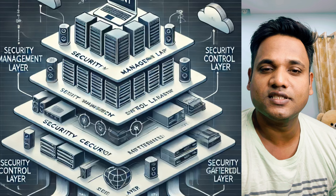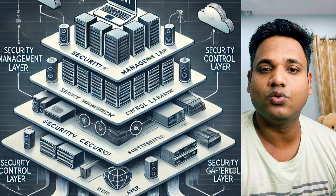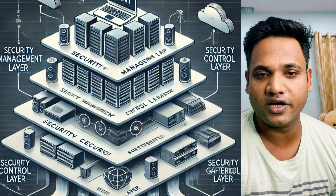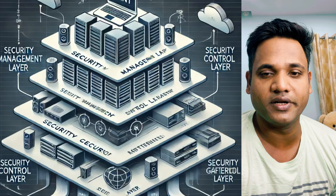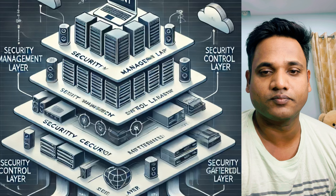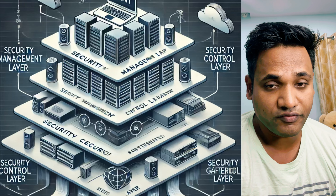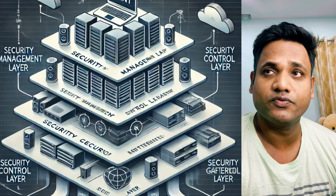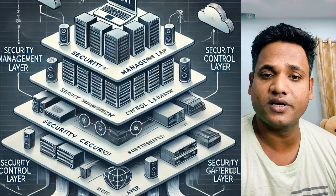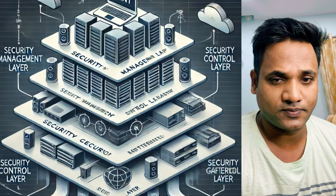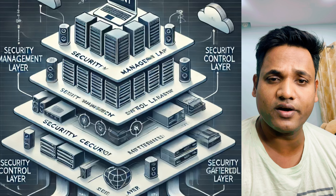The role of the Control Layer is that it applies the policy configuration. Whatever policies the administrator configures on the management layer get pushed to the security gateway. It enables the security gateway to inspect incoming and outgoing traffic and ensure it complies with the policy requirements, including features like VPNs, IPS, and IDS.